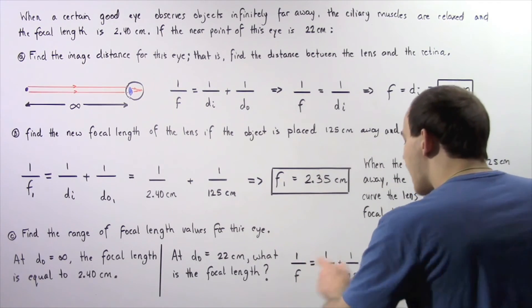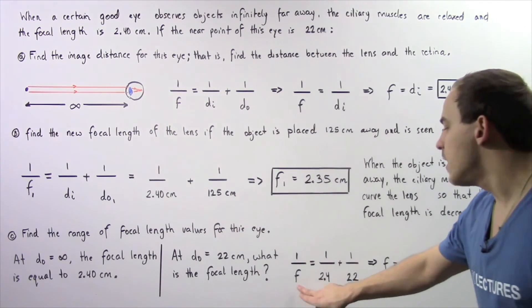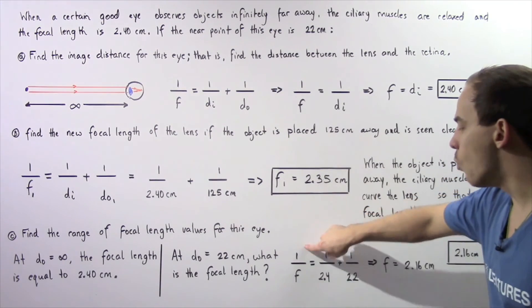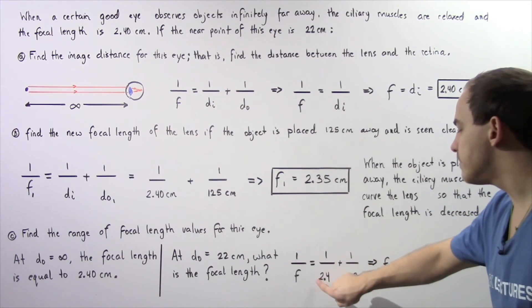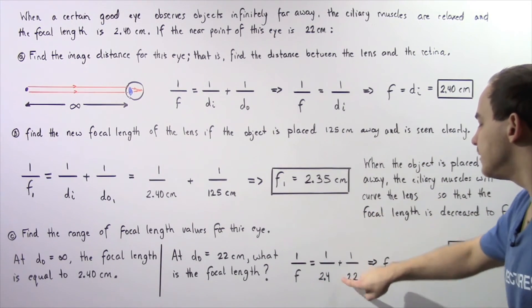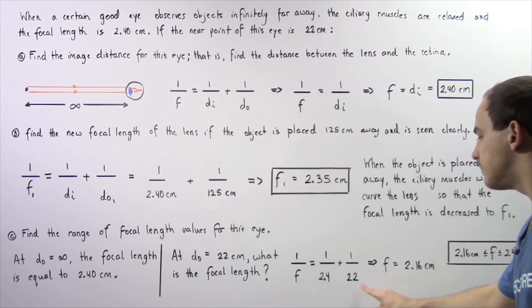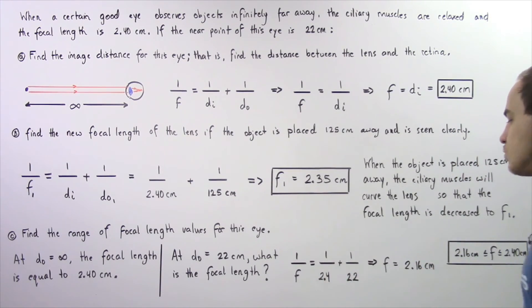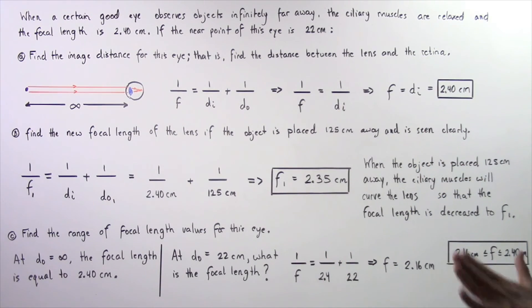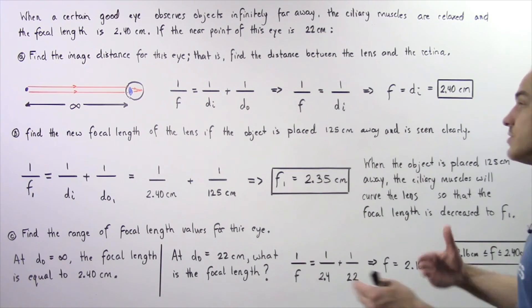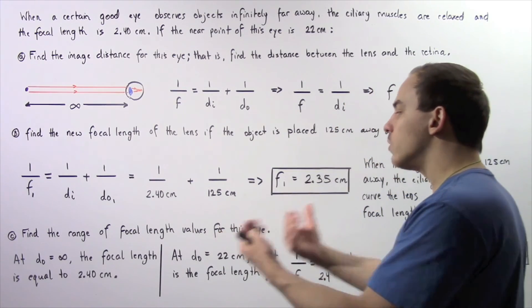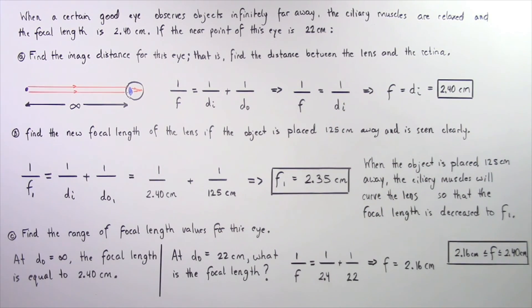We apply the thin lens equation and solve for the focal length. 1 divided by F equals 1 divided by 2.4 centimeters plus 1 divided by 22 centimeters. Adding and solving for the focal length, we get approximately 2.16 centimeters. So the range of values for our focal length spans between these two quantities: 2.16 centimeters is the lowest possible value and 2.4 centimeters is the highest possible value.